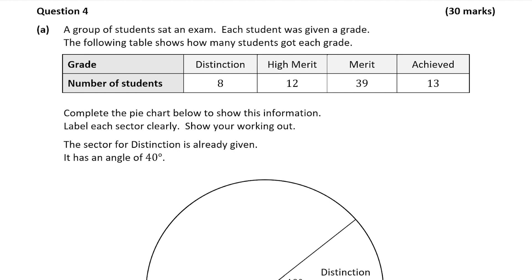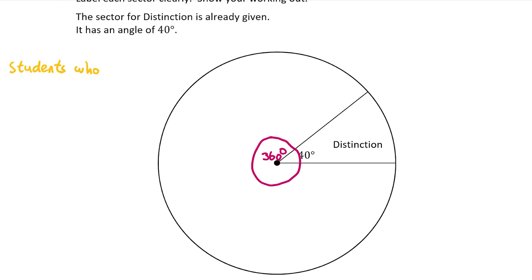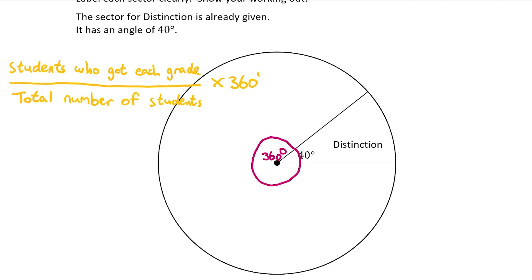The first thing to note about a pie chart is that it is a circle and there are 360 degrees in total. 40 of those degrees have already been taken by distinction, so we need to work out how many degrees higher merit, merit and achieved should get. The way to do that is by putting the number of students who got each grade over the total number of students and then multiplying by 360, as there are 360 degrees in the entire circle.